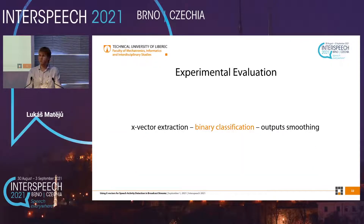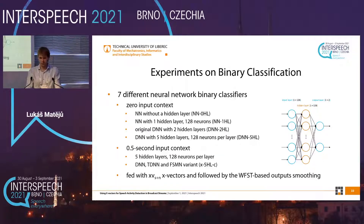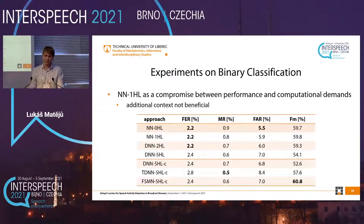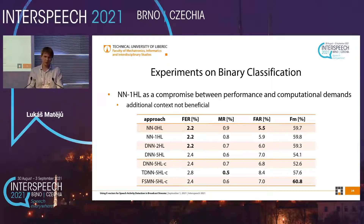For binary classification we trained seven different classifiers, focused on zero context: shallow networks with zero, one, two, and five hidden layers, and more complex architectures including time delay neural networks and FSMNs. The context-based networks performed quite similarly but slightly worse and increased computational demand, so they were not fit for the task. From the no-context networks, the shallow ones were the best. We chose the one hidden layer network as a compromise between performance and computational demands.